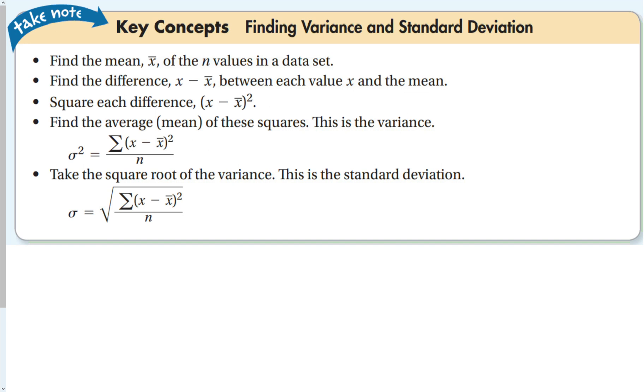Then we're going to make a table and find the difference between each x value and the mean. So we take every x and subtract x bar, the mean. Then we square these differences.